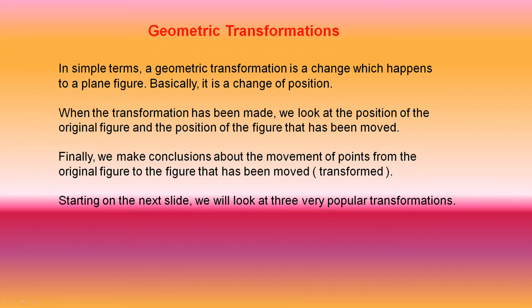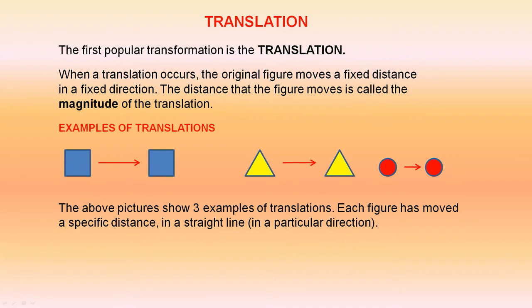Starting on the next slide, we will look at three very popular transformations. The first popular transformation is the translation. When a translation occurs, the original figure moves a fixed distance in a fixed direction. The distance that the figure moves is called the magnitude of the translation.